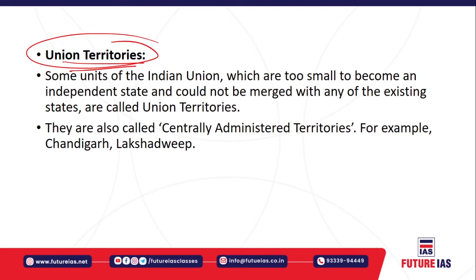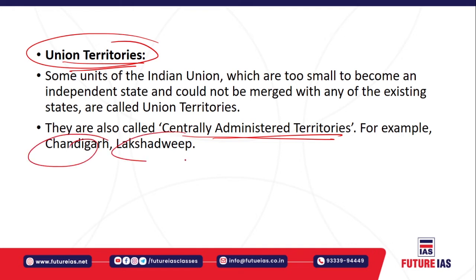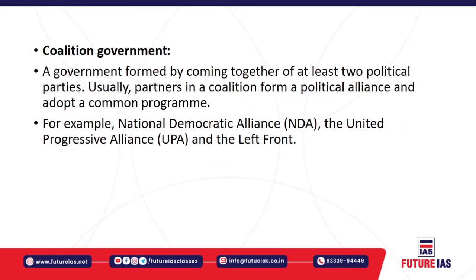Some territories are called union territories. They are too small to become independent states and cannot merge with existing states. They are directly governed by the central government with the help of an administrator appointed by the President — hence called centrally administered territories. Examples include Chandigarh, Lakshadweep, Dadra and Nagar Haveli, and Daman and Diu.